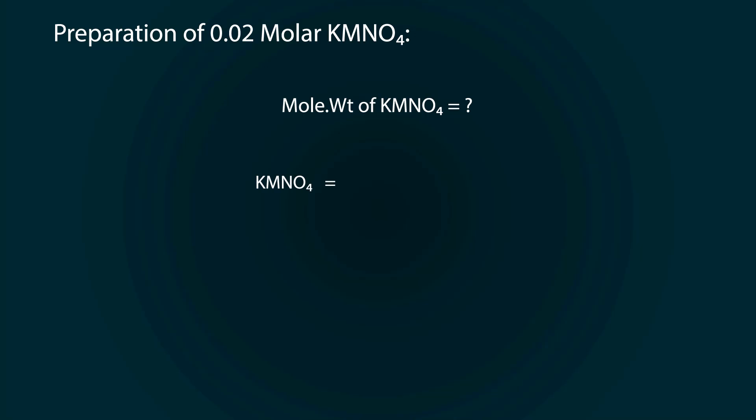So, atomic mass of 39.1 for potassium, plus 54.9 for manganese, plus 16 into 4 for oxygen. After calculation we have 158 grams per mole.